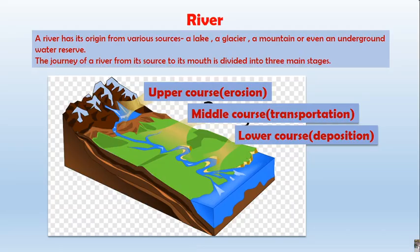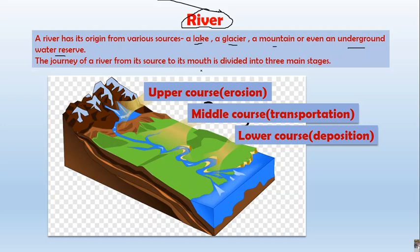First, I will explain river as an agent of denudation. A river has its origin from various sources like a lake, a glacier, a mountain, or an underground water reserve. The journey of a river from its source to its mouth is divided into three main stages. The first is called the upper course, which is when the river flows through the mountain.